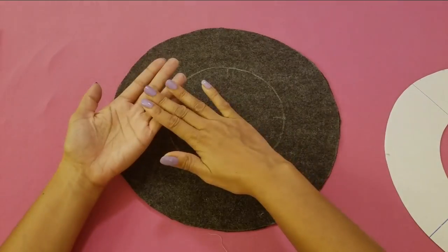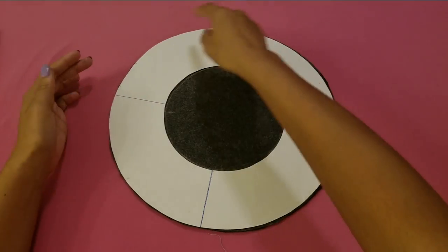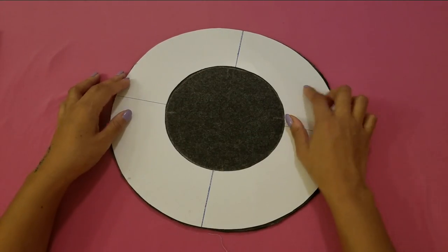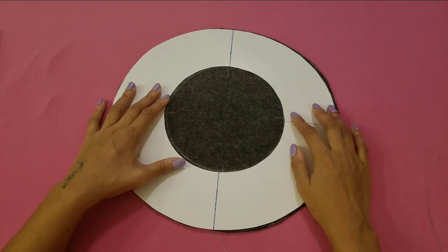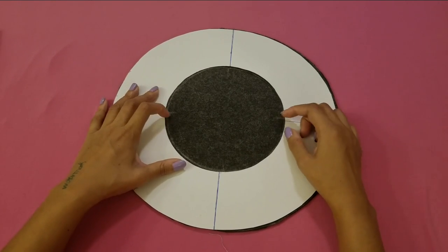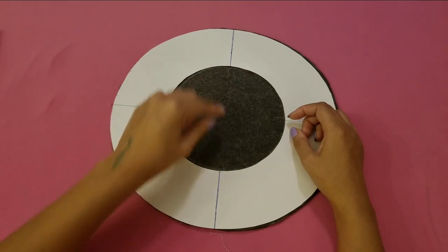So with your fabric doubled over, you are going to cut out the big circle and then mark on the inside the smaller circle. I marked right here where these lines are as well.